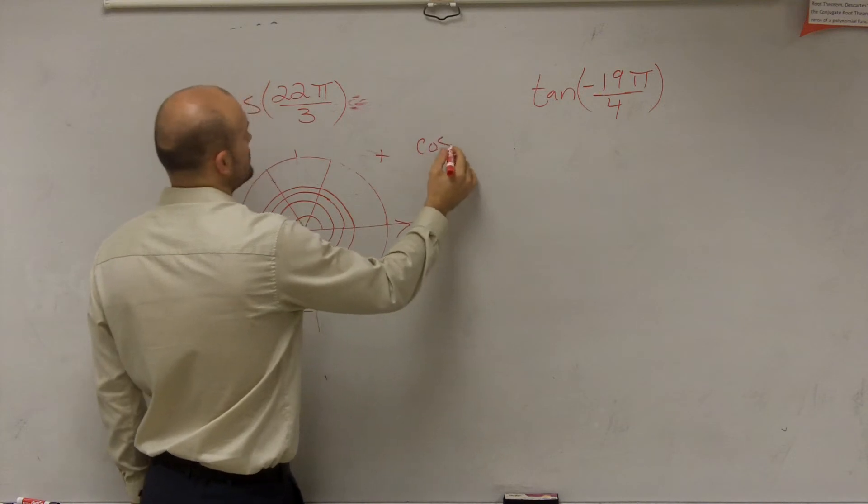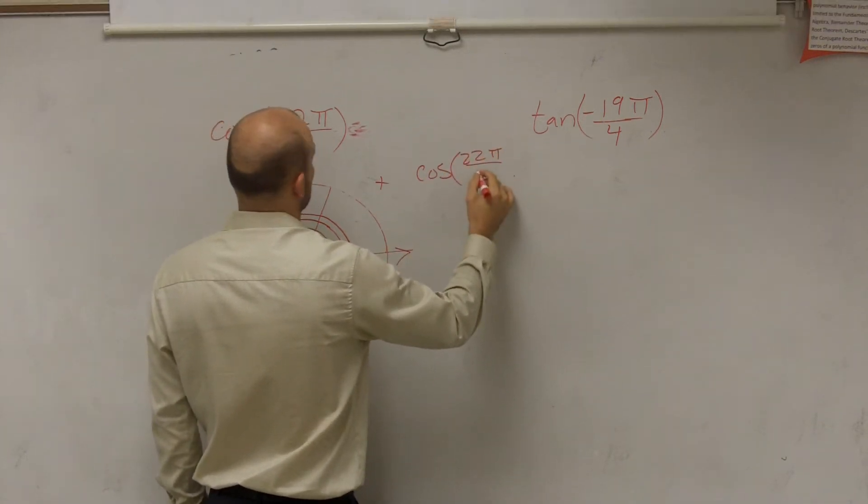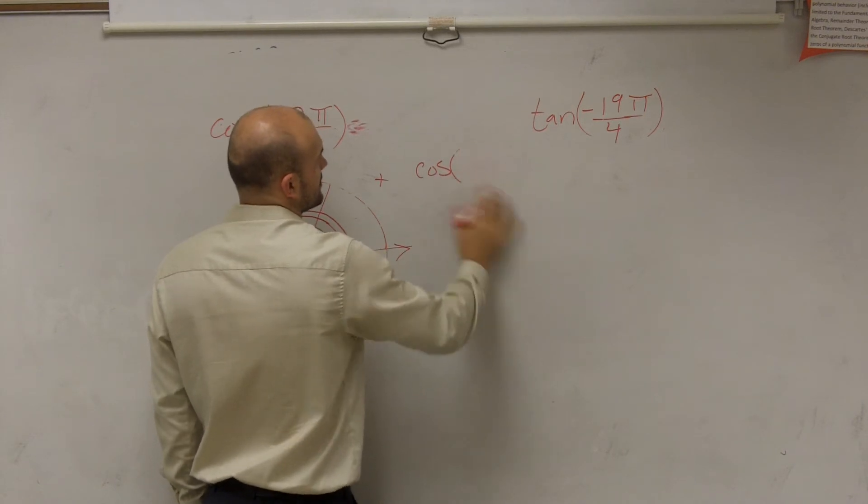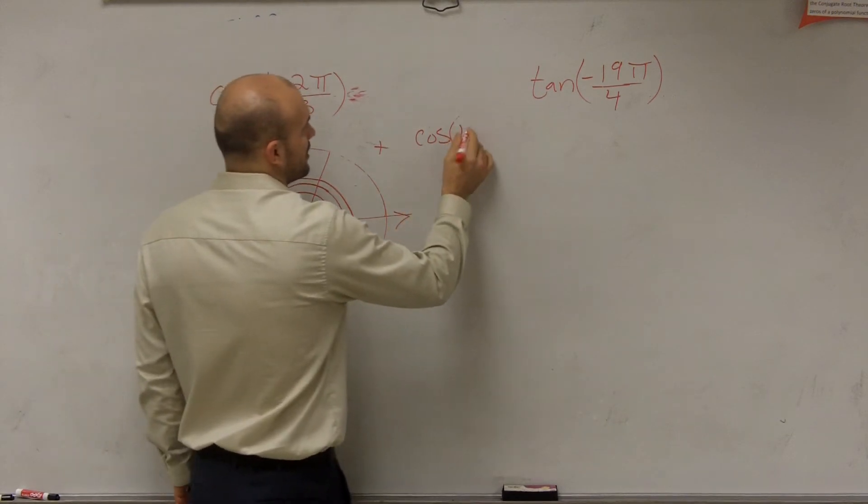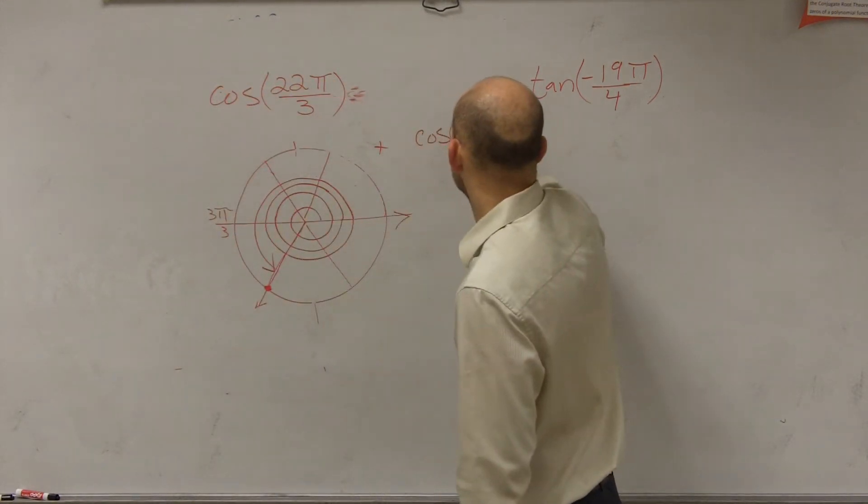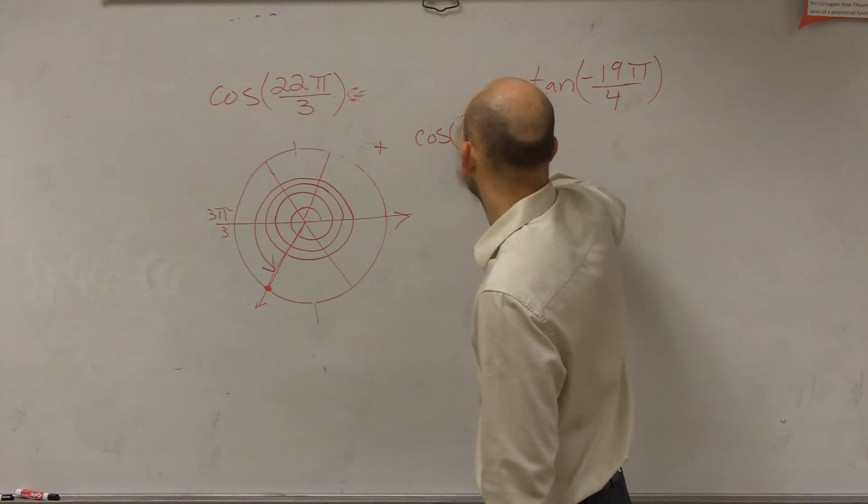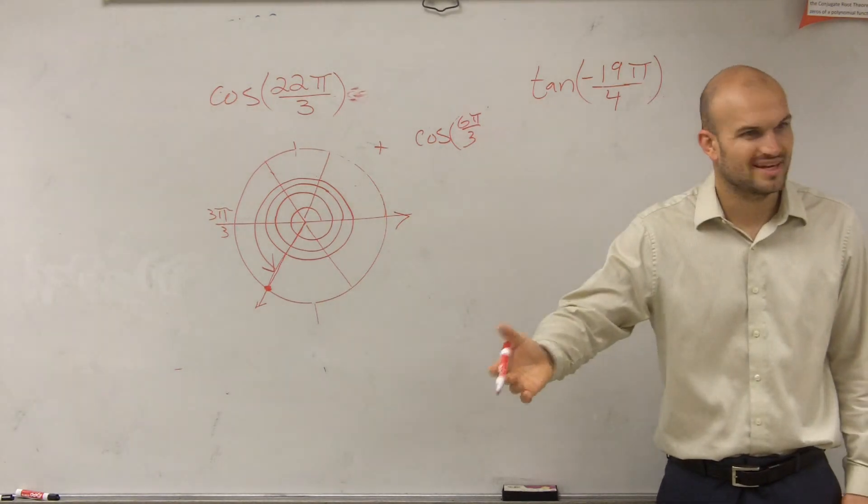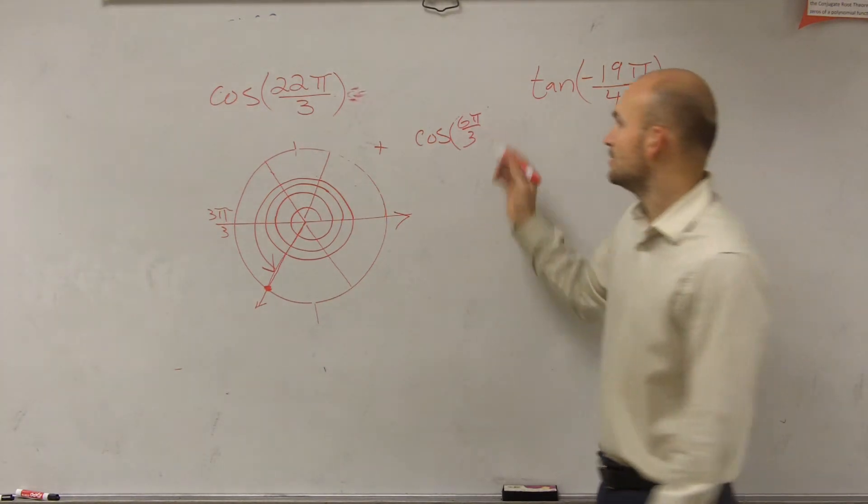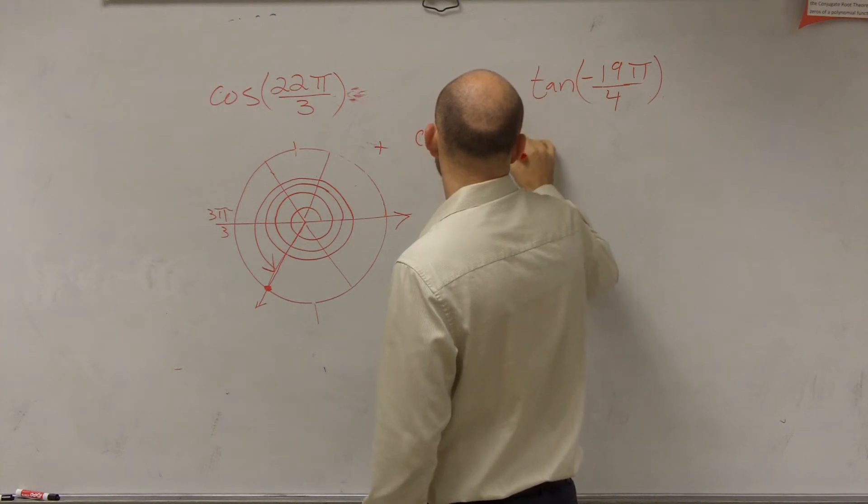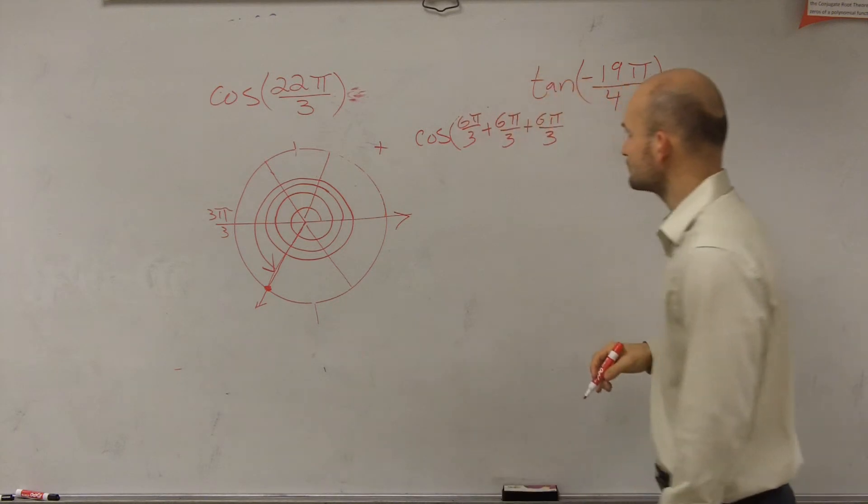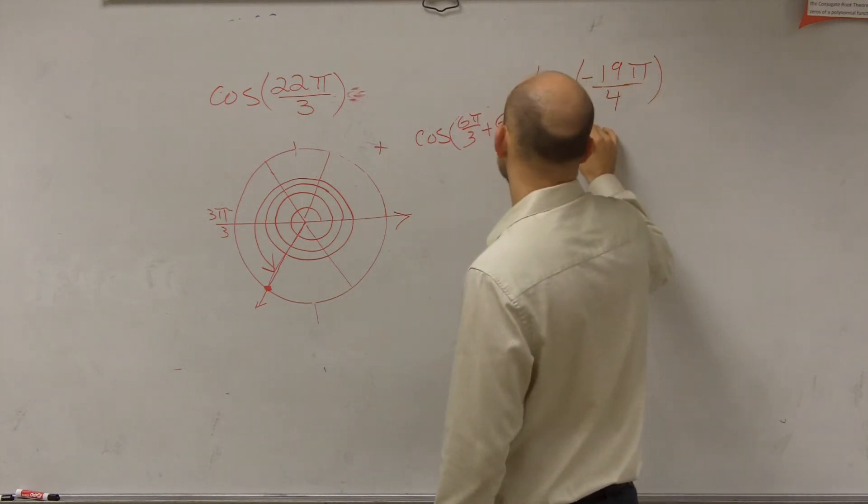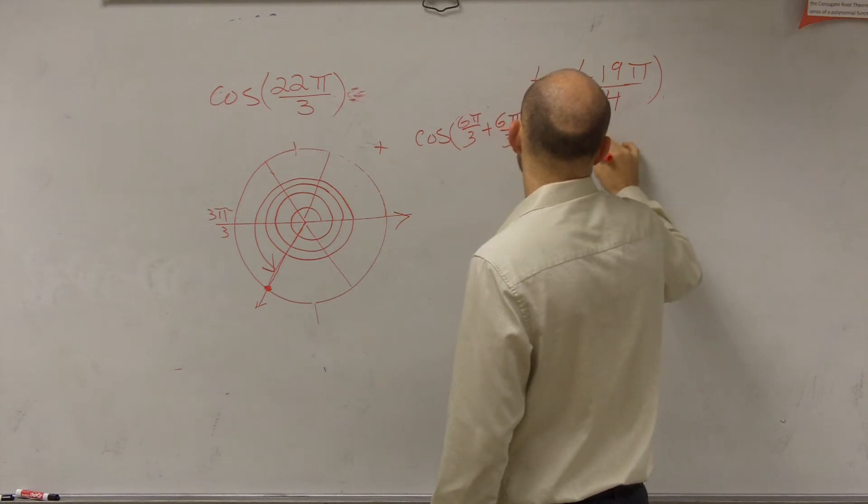What you can do is when I was using period as an aid, I can rewrite this as cosine of 22π over 3. I can write this as how many every single time I take out a circle. So I can say plus, or I could rewrite this as 12 over 3, 6π over 3. That's a period, or a revolution. It's a redundancy. 6π over 3 plus 6π over 3 plus 6π over 3, 6, 12, 18, plus 4π over 3.